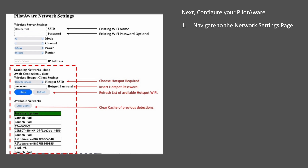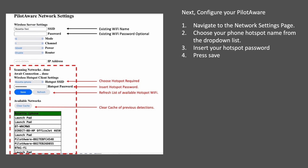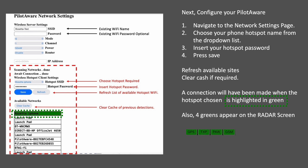Next you need to pair your PilotAware and mobile hotspot together. Navigate to the network settings page on your PilotAware. Looking at the bottom half of the network page highlighted in red, select your hotspot name from the drop-down list, then insert your hotspot password and press save. Two buttons are included to refresh the available hotspots and to clear the cache if required. A connection to the PilotAware servers will have been made when the hotspot chosen is highlighted in green, and four greens appear on the radar screen. If no box is highlighted then no dongle has been connected, or a connected dongle is the wrong type or not working.